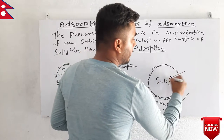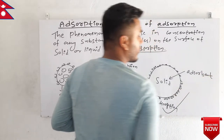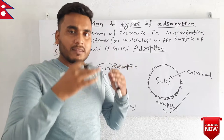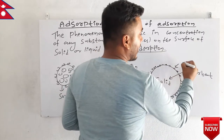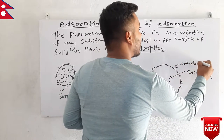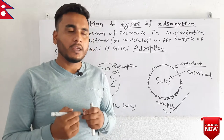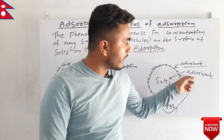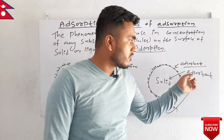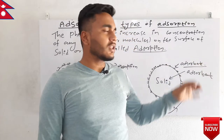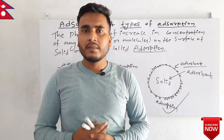In adsorption, this solid phase is called the adsorbent — it is the solid on which the gaseous molecules are being attached. Those gaseous molecules that are being adsorbed are called the adsorbate. So the solid or liquid part on which gases are being adsorbed is the adsorbent, and the gas molecule is called the adsorbate.